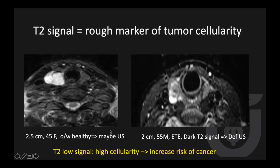T2 signal is a rough marker of tumor cellularity — bright T2 signal is a good thing, dark T2 signal is a bad thing. For example, nodules in the gray area with extrathyroidal extension should be considered cancer until proven otherwise, and you would want to recommend ultrasound regardless of size or age.